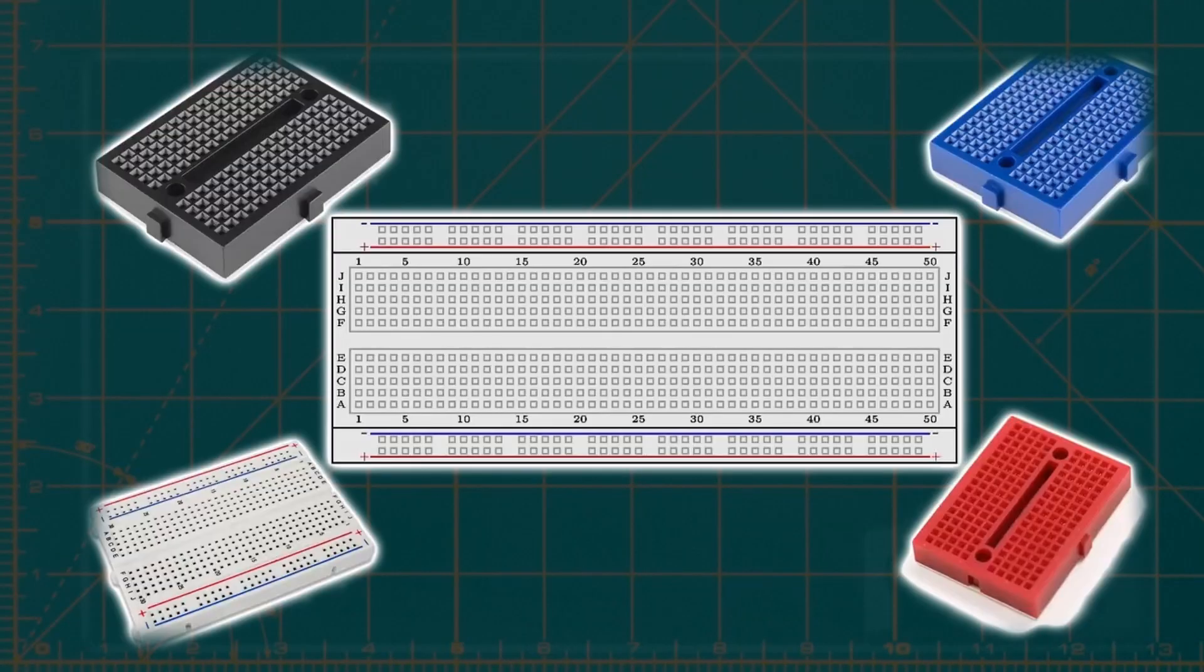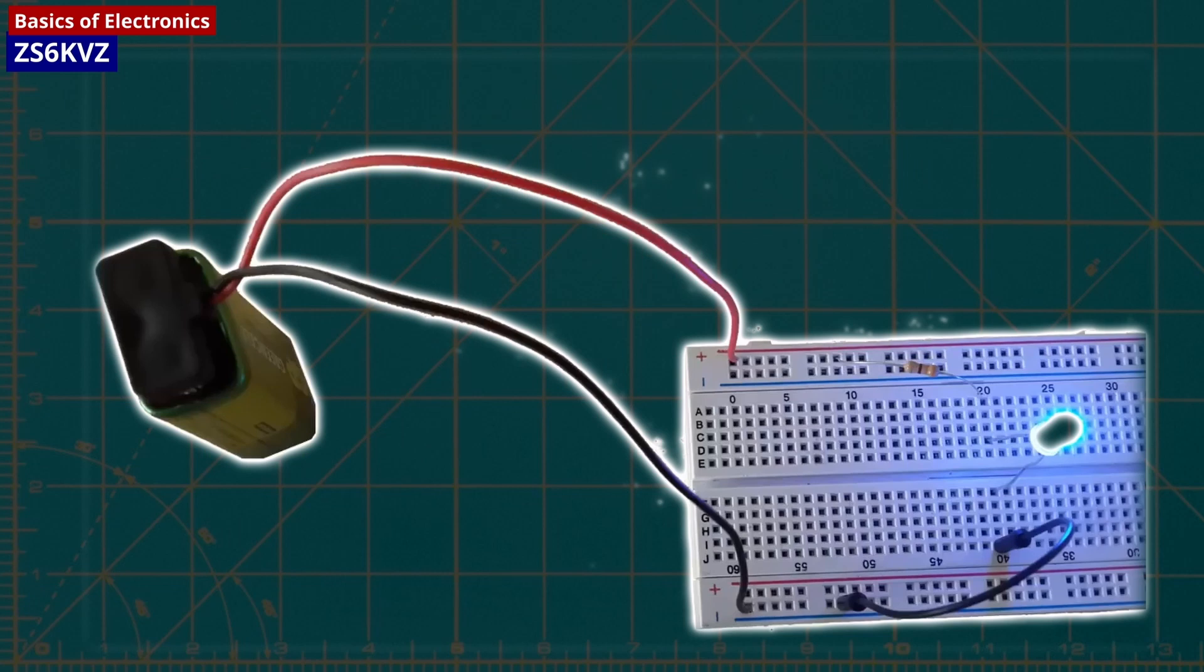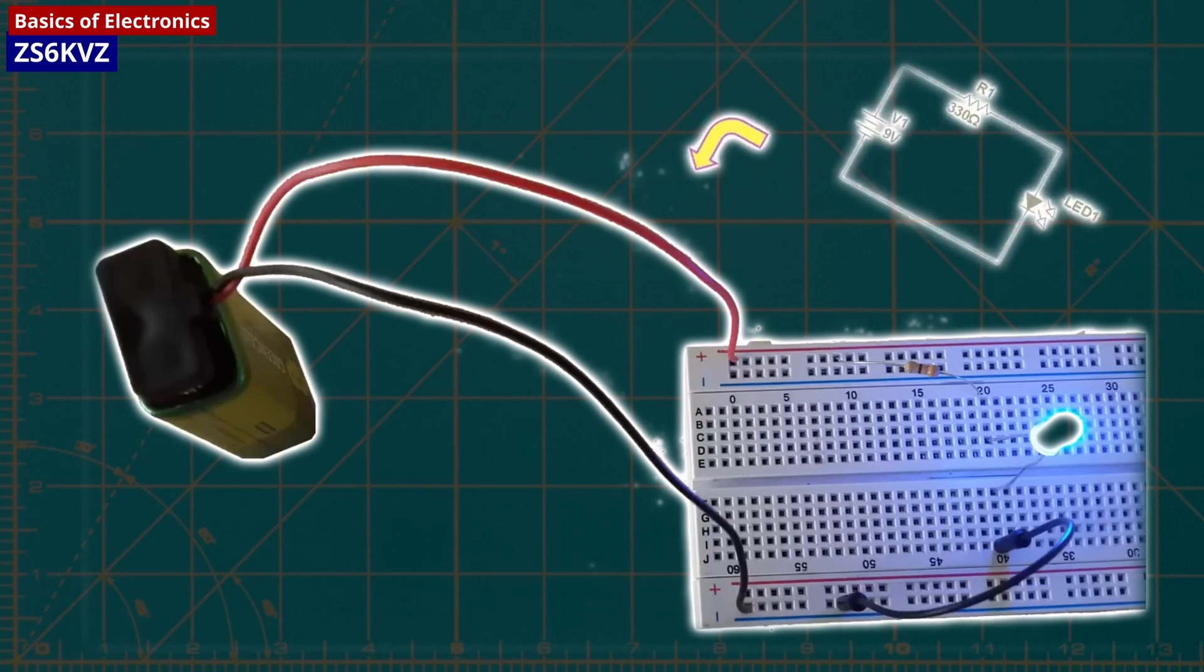Breadboards are special boards for prototyping electronics. They have a grid of holes that are split into electrically continuous rows. In the center, there are two columns of rows that are side by side, allowing an integrated circuit to be inserted and connected to each pin of the circuit.